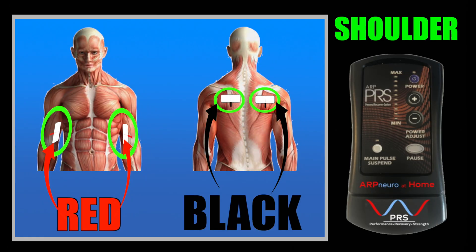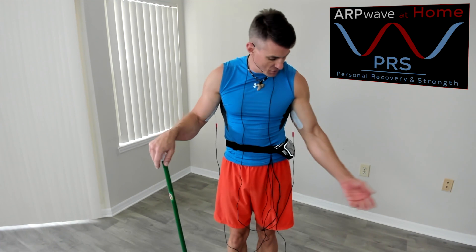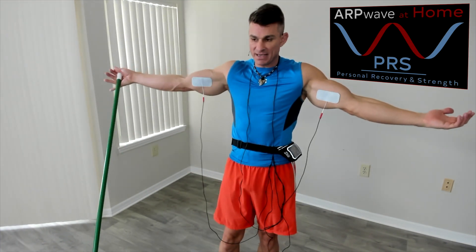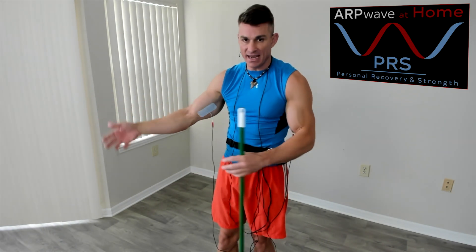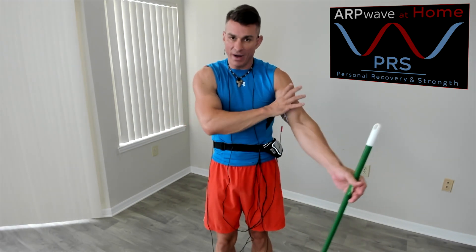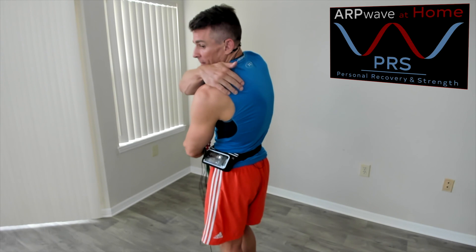Now that all four pads are placed, go ahead and wrap them up and then we'll get into the movement portion of this protocol. As you can see, I have the red pads on the inside of my biceps — you can certainly wrap these if you want to. The black is on the back, and the shirt is tight enough to keep it secure. So: black on the back, red on the medial portion of the bicep.